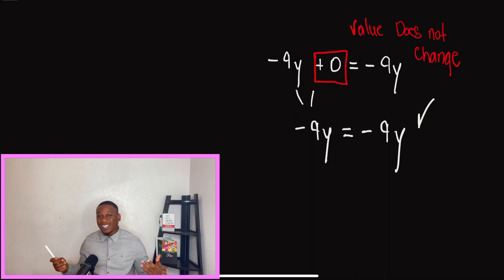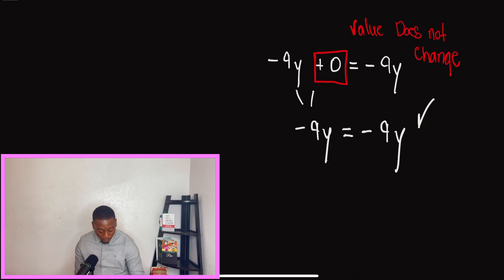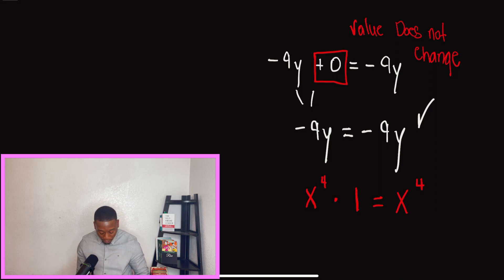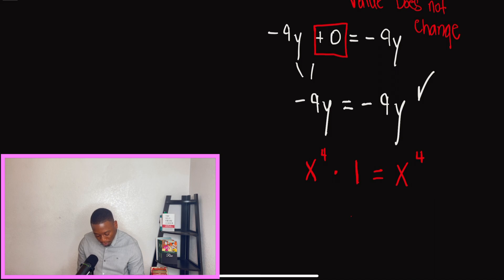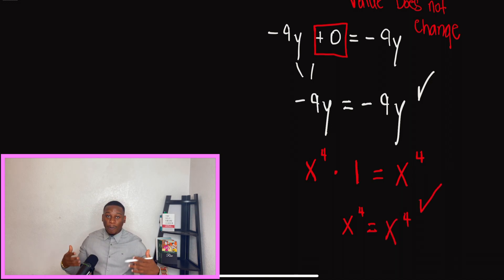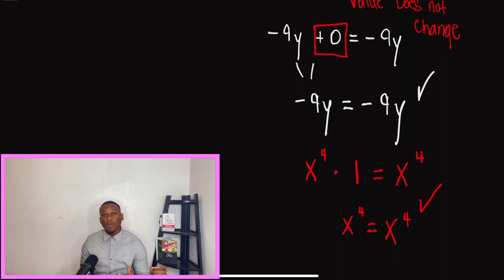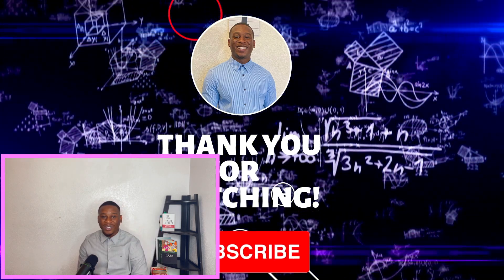If you found this review helpful, comment down below, subscribe to our channel, and leave comments for future videos you'd like to see. For the multiplication aspect of the identity property — the identity property stays the same. When multiplying, they give you something like X to the fourth times one equals X to the fourth. Anything you multiply by one doesn't change the value. This is the identity property of multiplication. Thank you guys for joining me — this is Professor Peters. Subscribe to our channel and we'll catch you next time.